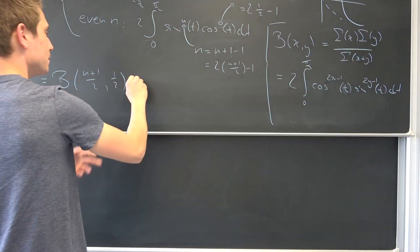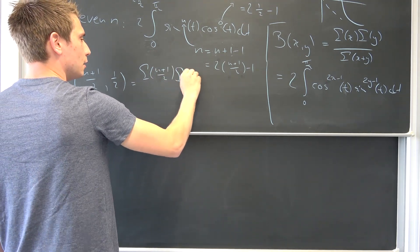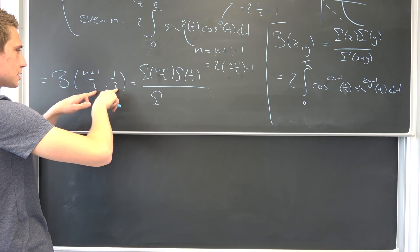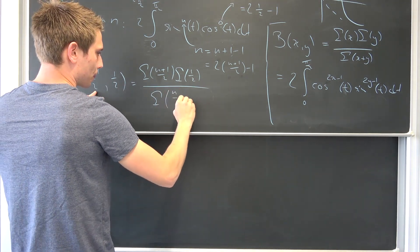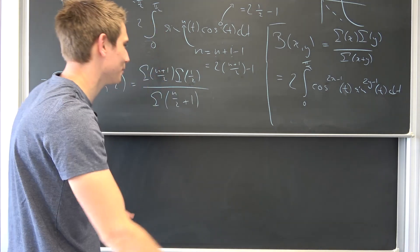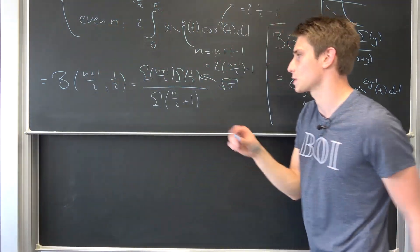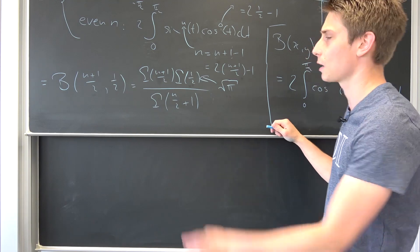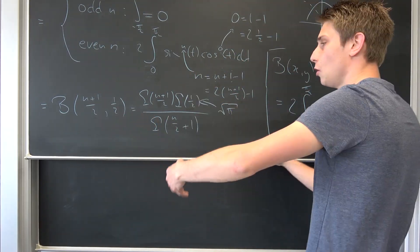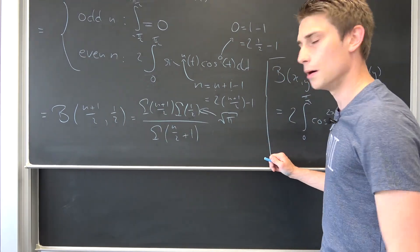By definition, beta of (n+1)/2 comma 1/2 gives us gamma of (n+1)/2 times gamma of 1/2 over gamma of n/2 plus 1. And gamma of 1/2 — derived from the Gaussian integral — is nothing but the square root of pi. With identities maybe derived before, you can even rewrite those gamma values a little bit differently using even more case work.